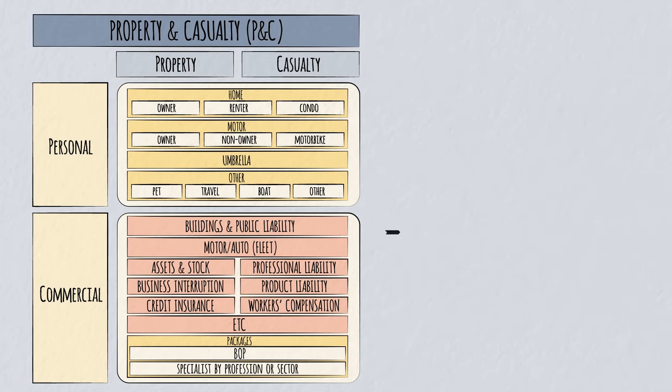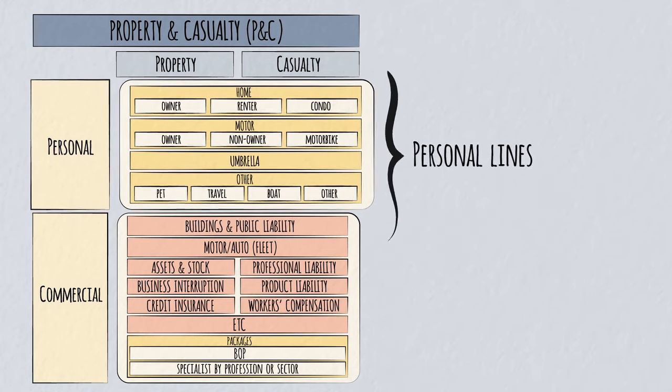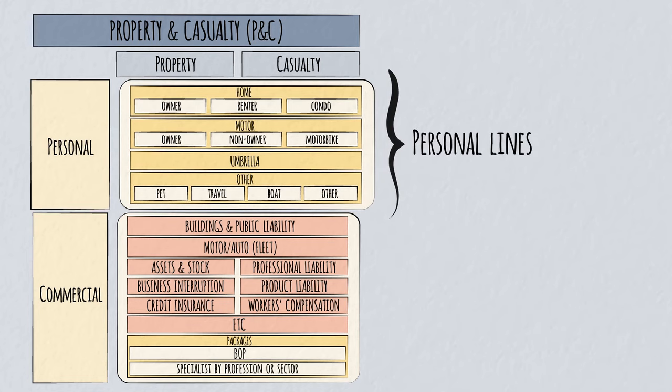The insurance industry calls these different groups lines of business. This might refer to the overall group, for example personal lines, or the categories beneath them, for example home lines or motor lines.